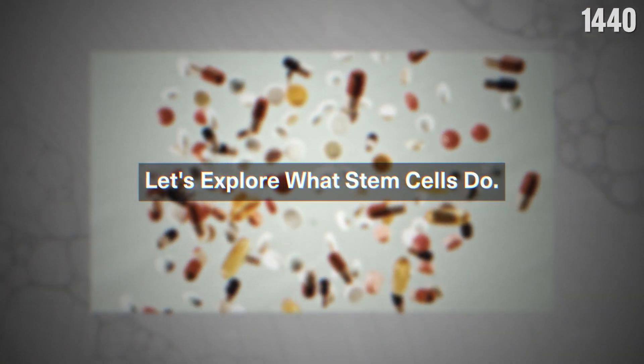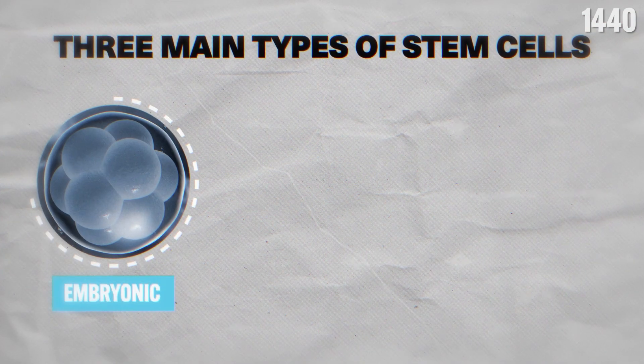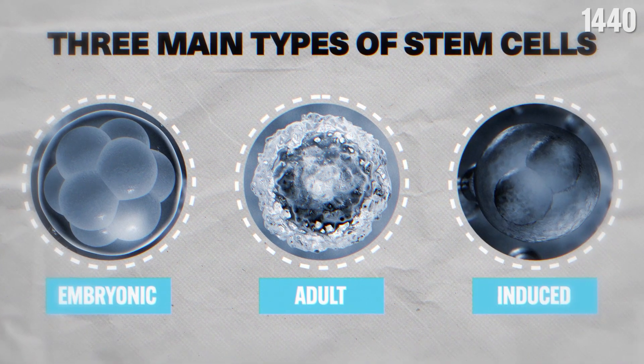Let's explore what stem cells do. There are three main types: embryonic, adult, and induced pluripotent stem cells.